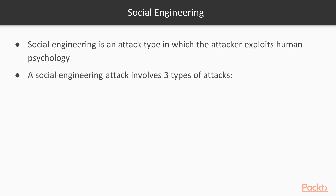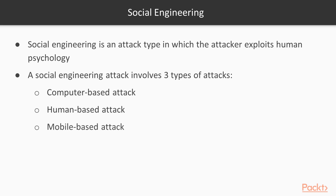There are mainly three types of social engineering attack. The first is computer-based attack, the second is human-based attack, and the third is mobile-based attack. In a computer-based attack, the attacker tries to create fake login web pages — for example, which is called a phishing attack. In a human-based attack they try to manipulate, and in a mobile-based attack they try to install malicious apps inside the victim's mobile phone.